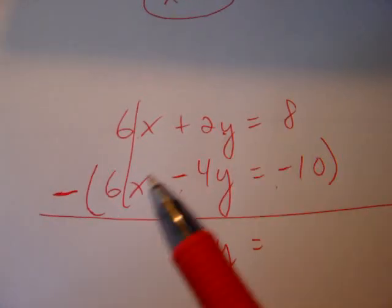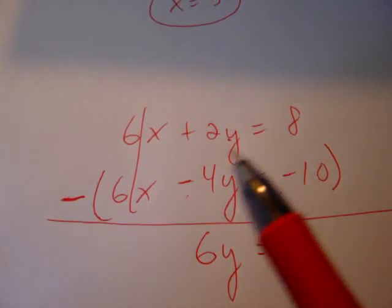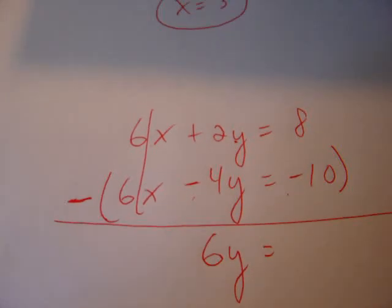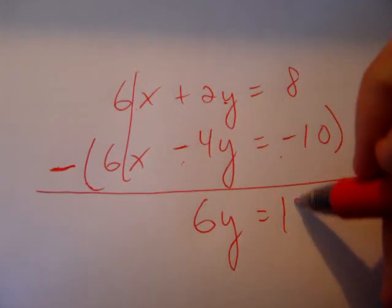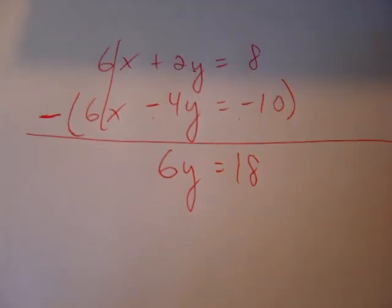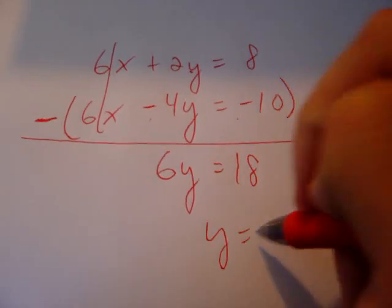And now, we have 8 take away negative 10. Taking away negative makes it positive, so 8 plus 10 is 18. Now, you can see that we have 6y equals 18. Dividing both sides by 6, you get y equals 3.